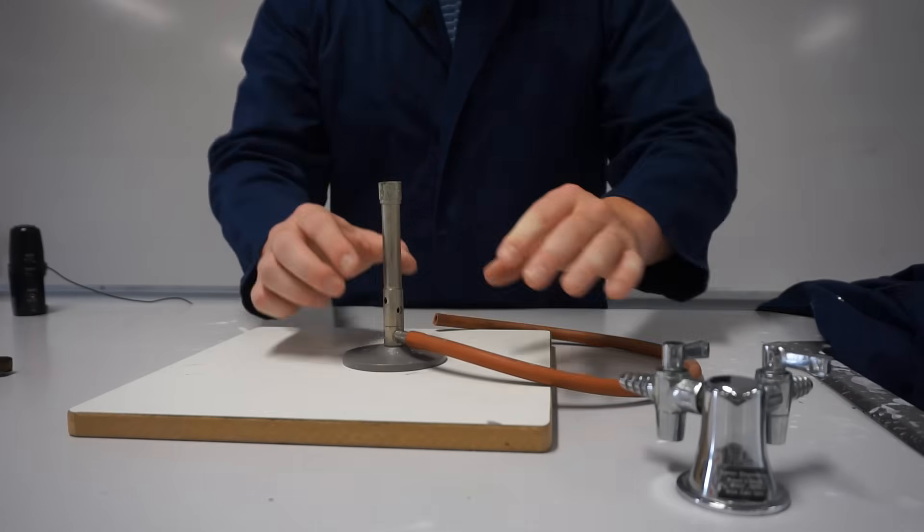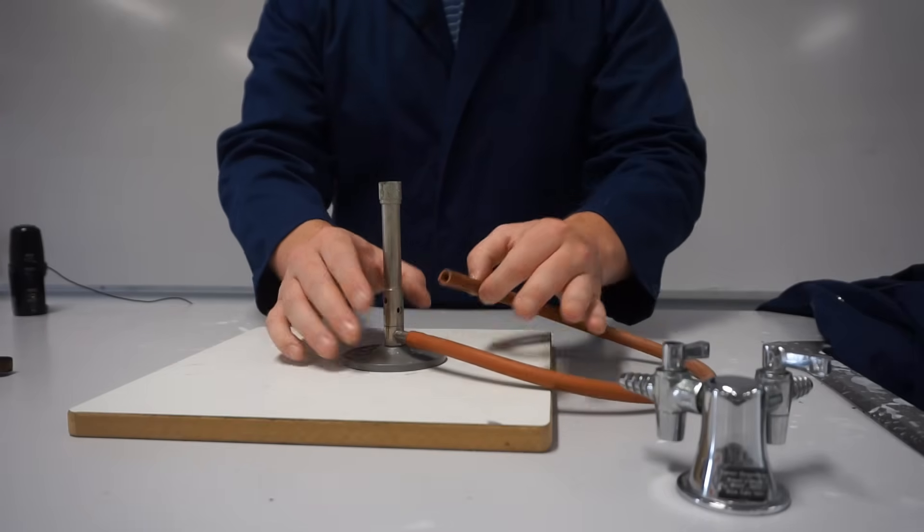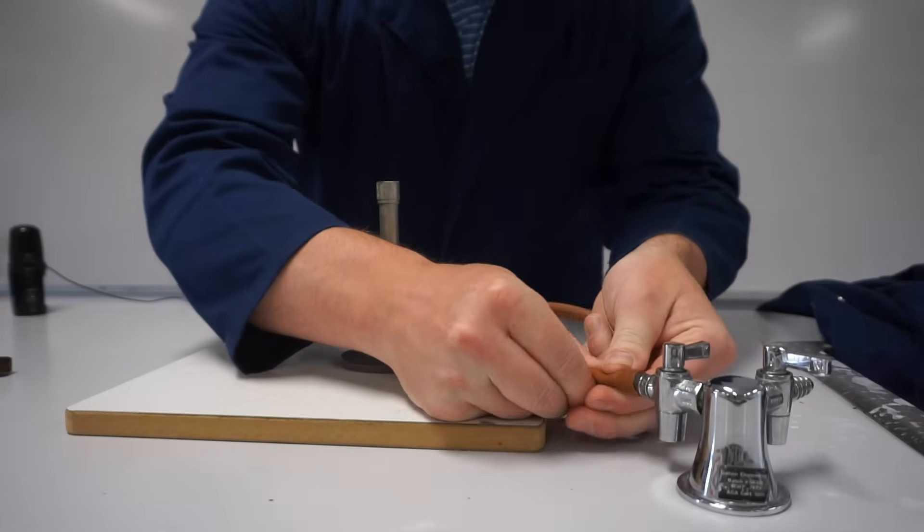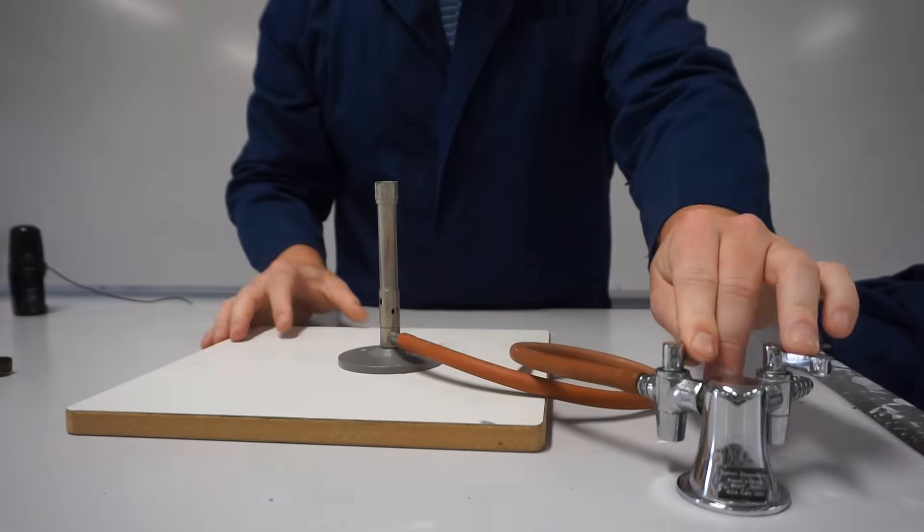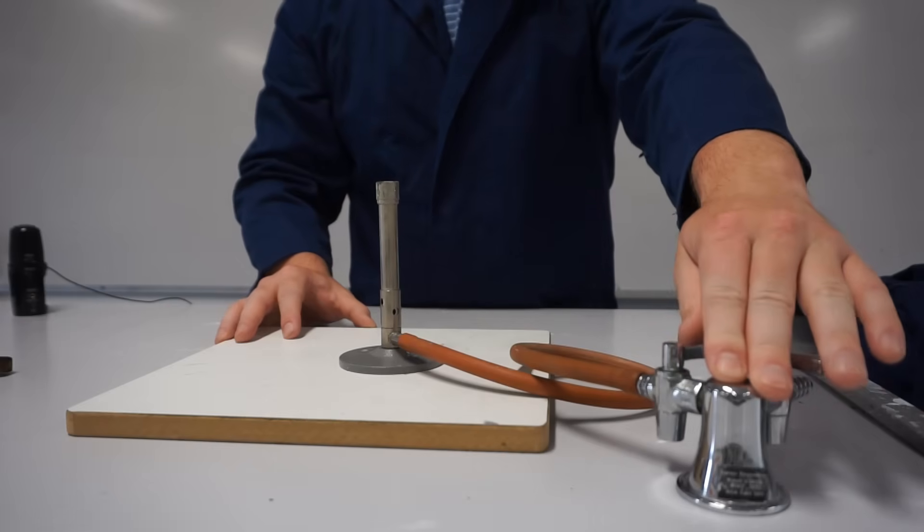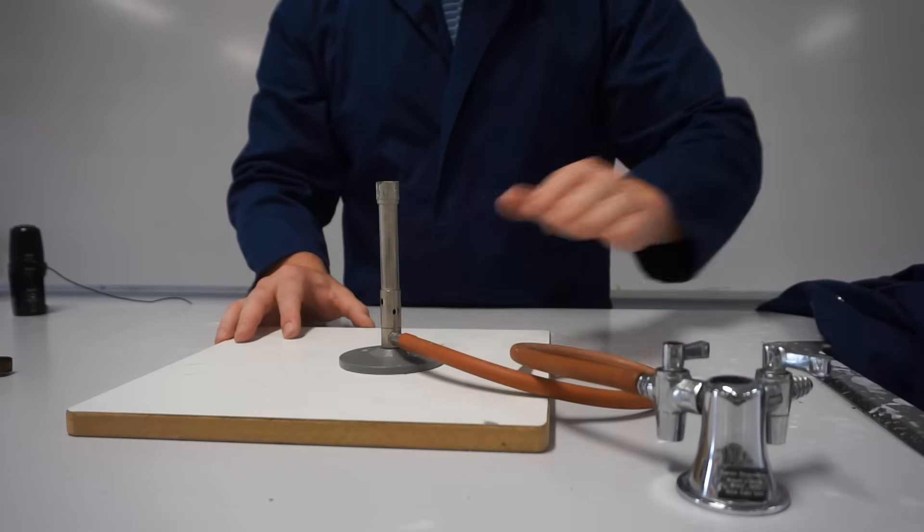Once you've set up your Bunsen burner, inspect your hose for any kinks or holes or wear and tear and if you're happy with it, plug it onto your tap nice and securely. Most gas taps supply propane but if your lab or your school uses a different type of gas for your Bunsen burners, let me know in the comments.